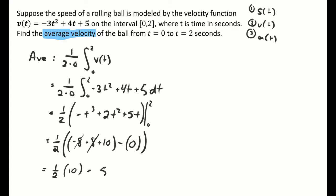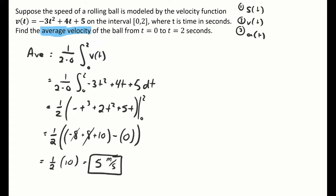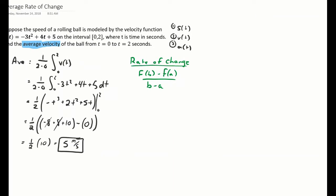So 1/2 times 10 equals 5. The average velocity is 5 meters per second. Now let's talk about when to use average value versus average rate of change. When I find average rate of change, I use f(b) minus f(a) over b minus a — that's the slope of the secant line. Average value uses the integral: 1 over b minus a times the integral from a to b of f(x).